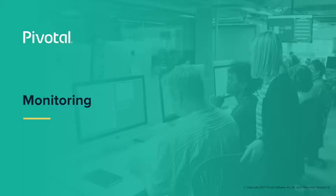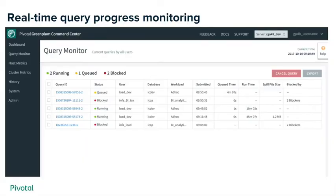On the new query monitor, we have an additional indicator for blocked queries. When a query is blocked by another query, it will show a block status as well as a number in the blocked-by column. This allows you to drill down into the blocking queries and draw a clear chain of blocking and locking hierarchy. You can view the amount of time a query has been blocked, drill down into the blocking query, and cancel any queries that have been long-standing blockers.